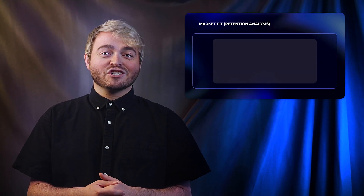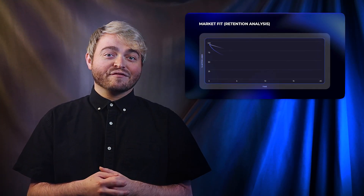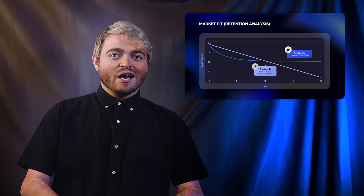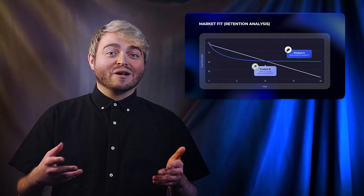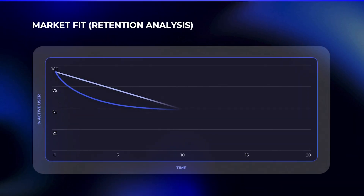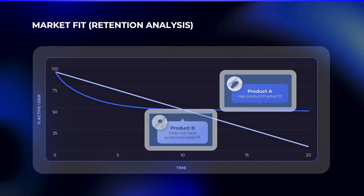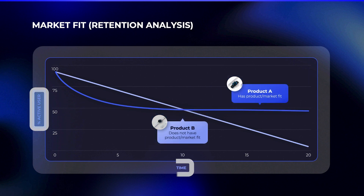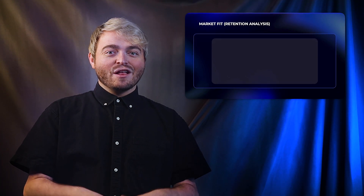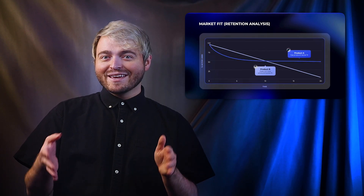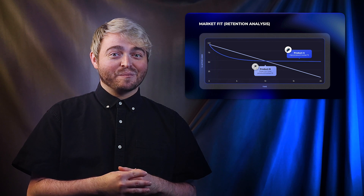Product market fit is achieved when the product or service offerings answer to the needs of the target customer. A solution is only a good one when it's relevant to the end user. To prove product market fit, this retention graph compares two products in terms of their number of active users over time. Although they started at the baseline, their retention trajectories show which achieved product market fit and which failed to do so.